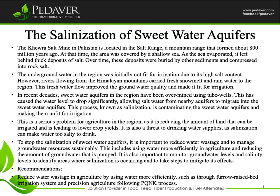It is also important to monitor groundwater levels and salinity levels to identify areas where salinization is occurring and to take steps to mitigate its effects. Recommendations: reduce water wastage in agriculture by using water more efficiently, such as through furrow-raised bed irrigation systems and precision agriculture following the PQNK process.